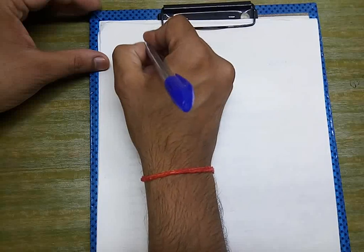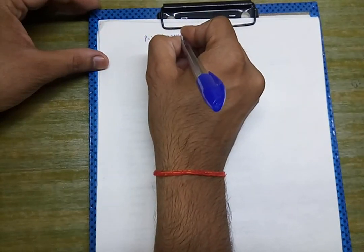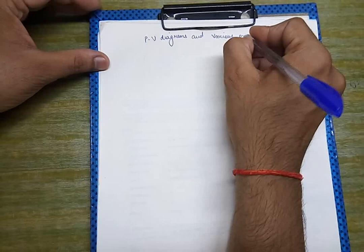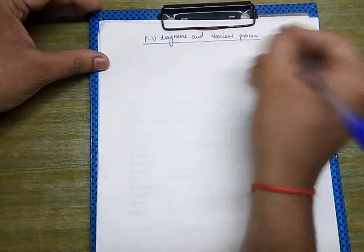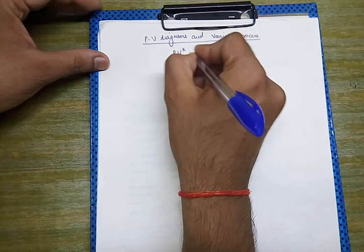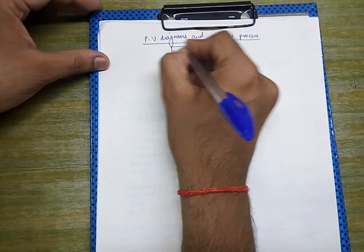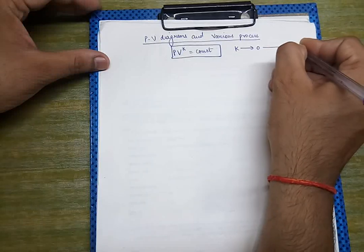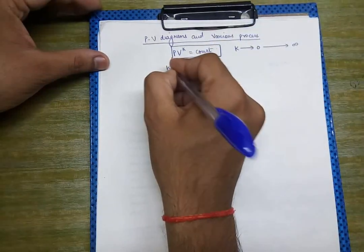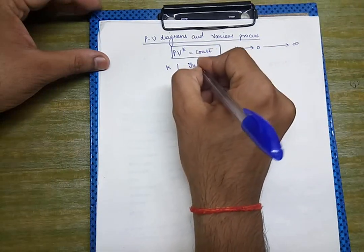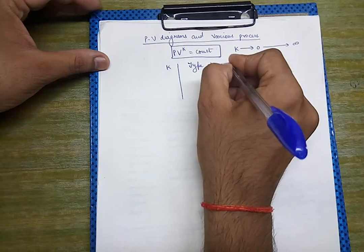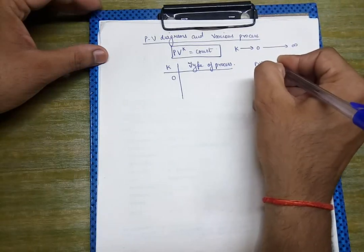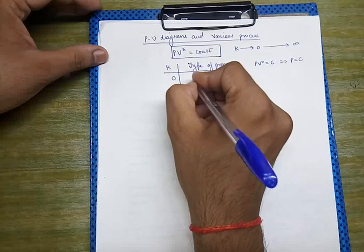In this lecture we shall start with PV diagrams and various processes. The general expression is pv^k = constant. The value of k can range from 0 to infinity. When k = 0, pv^0 = constant, which means pressure is equal to constant — this becomes the isobaric process.